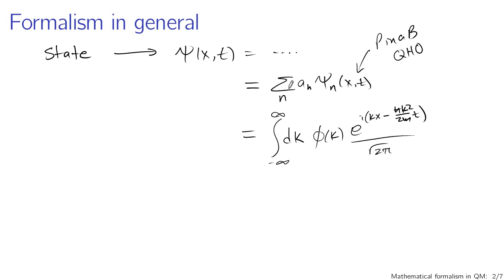These expressions bear a certain similarity: instead of a sum, we have an integral; instead of a discrete list of coefficients, we have a function phi of k; and instead of a discrete stationary state, we have a continuous stationary state.